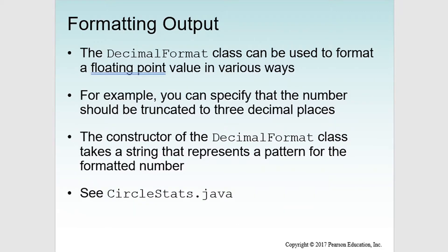The DecimalFormat class can be used to format floating point values in various ways. For example, you can specify that a number should be truncated to three decimal places. The constructor of the DecimalFormat class takes a string that represents a pattern for the formatted number.